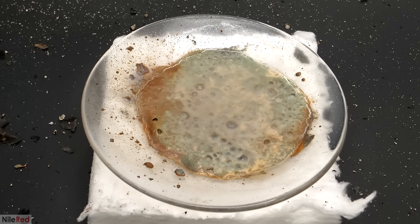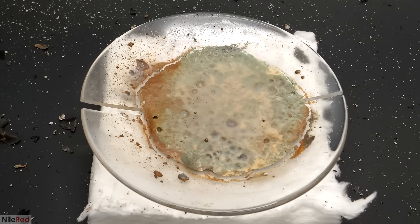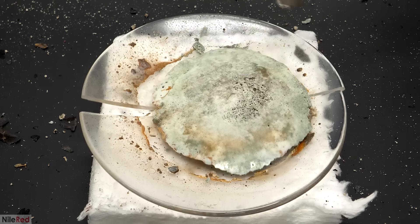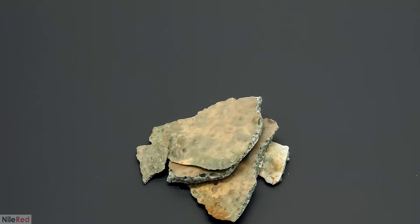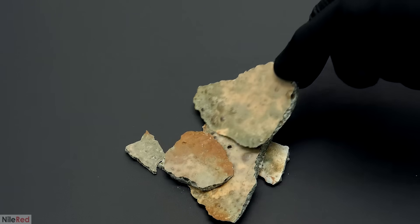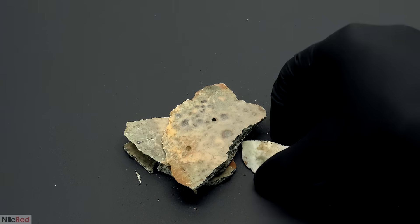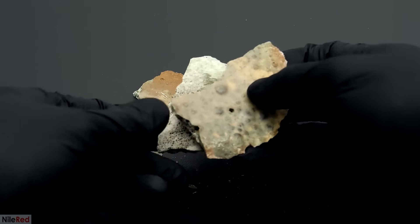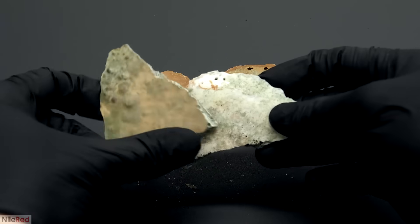As it cooled, it changed colors a bit, and it also cracked my dish, but I pretty much expected that to happen. It separated pretty easily from the glass, and it was relatively fragile. It felt and sounded very similar to porcelain, which I thought was interesting. As I said before, I think it was made mostly of sodium sulfate, along with some manganese dioxide, and maybe some chloride salts.